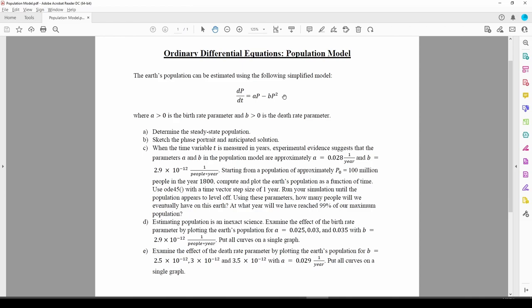Before we do any coding, it's always a good idea to hand draw the phase portrait and anticipated solution so we can get a rudimentary understanding of what the numerical solution should look like. Part A wants us to find the steady state population. We'll obtain the steady state population in the process of generating the phase portrait and anticipated solution. Recall that the steady state is just a fancy word for the stable fixed point.